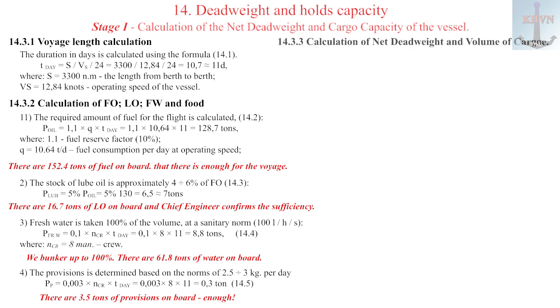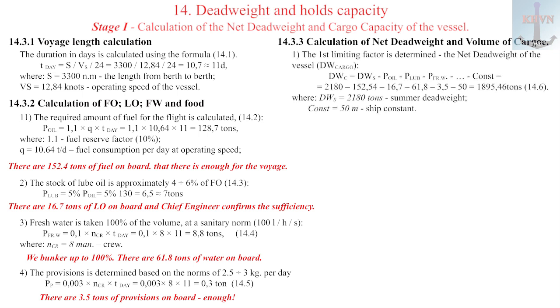14.3.3 Calculation of net deadweight and volume cargo capacity for voyage. 1. The first limiting factor is determined, the net deadweight of the vessel, which is equal to the difference between the summer deadweight, deadweight for the summer load line or your zone, and all ship bunker and stores with constant, that is, the total cargo in tons that you can take on board on this voyage, formula 14.6. After deductions, we have net deadweight equals 1895.46 metric tons.